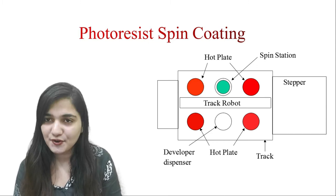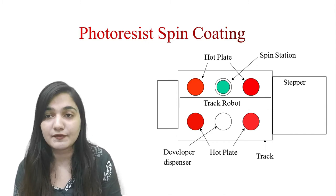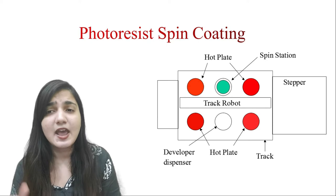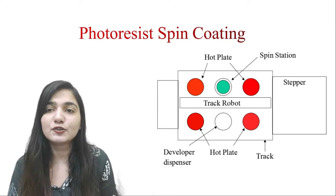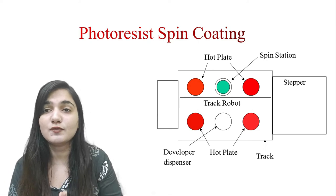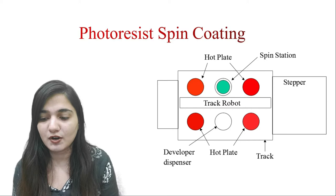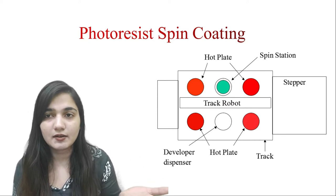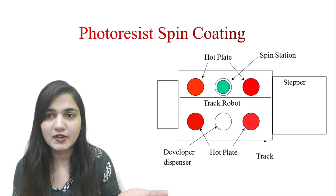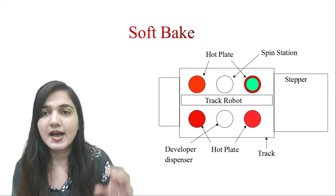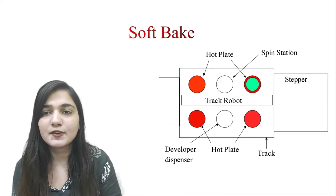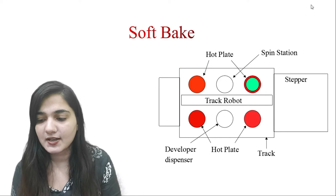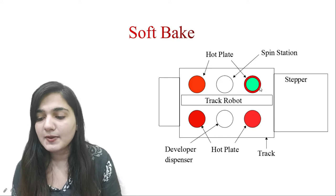If you have any doubt you can go back to the previous videos where I was discussing the photolithography process. After this I have the photoresist on the surface of the wafer, and now after this I will be giving it for the soft baking process. Here the soft baking process will be happening.